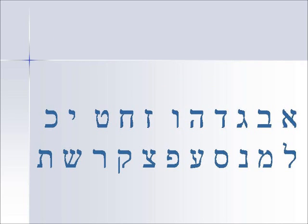It's interesting because kaf-lamed are the two middle letters of the Aleph Bet, just as the Aleph and the Tav are the beginning and ending letters — kaf-lamed appear directly in the middle.